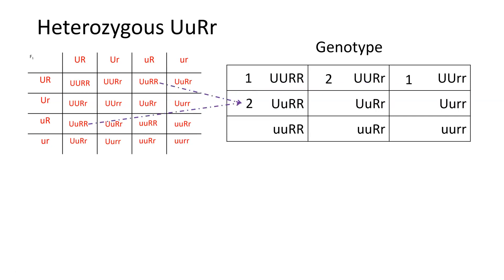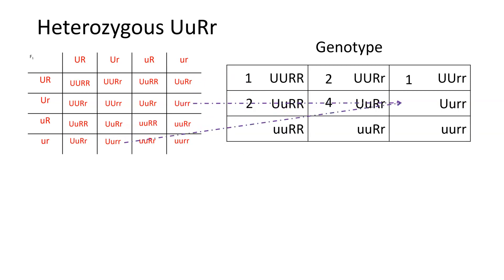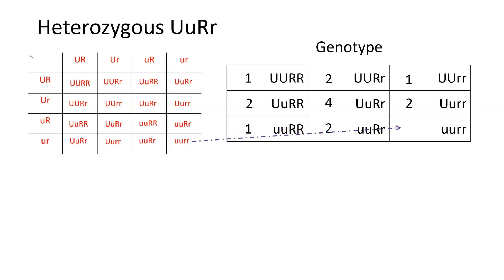UuRR — we've got two. UuRr — we have four. Uurr — we've got two. uuRR — we've got one. uuRr — we've got two. And uurr — we've got one.